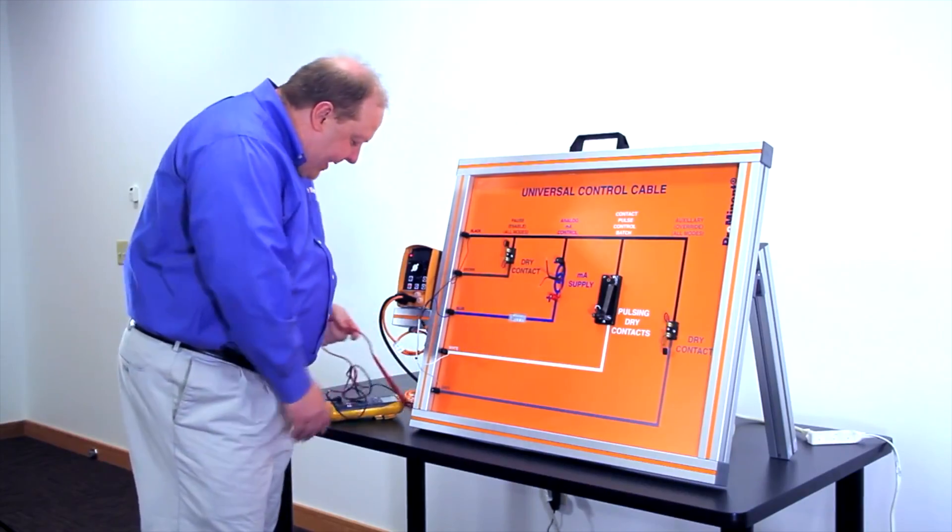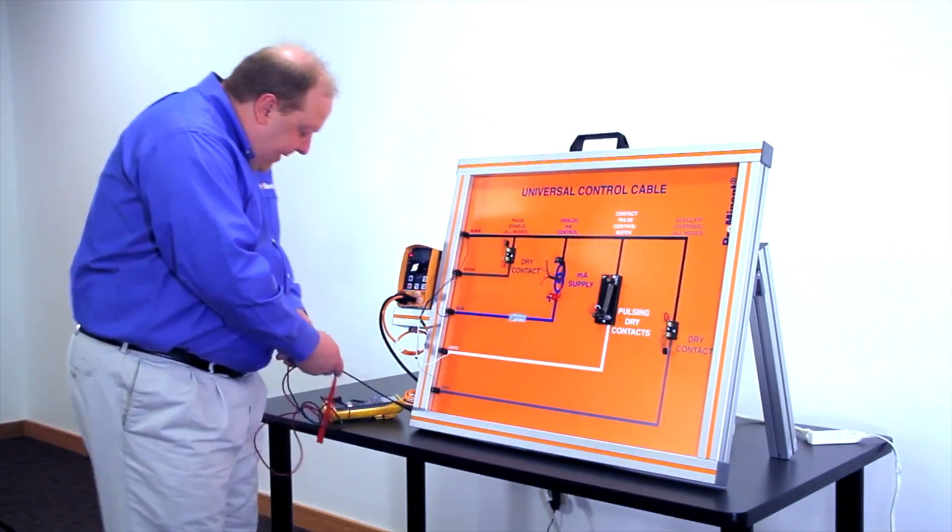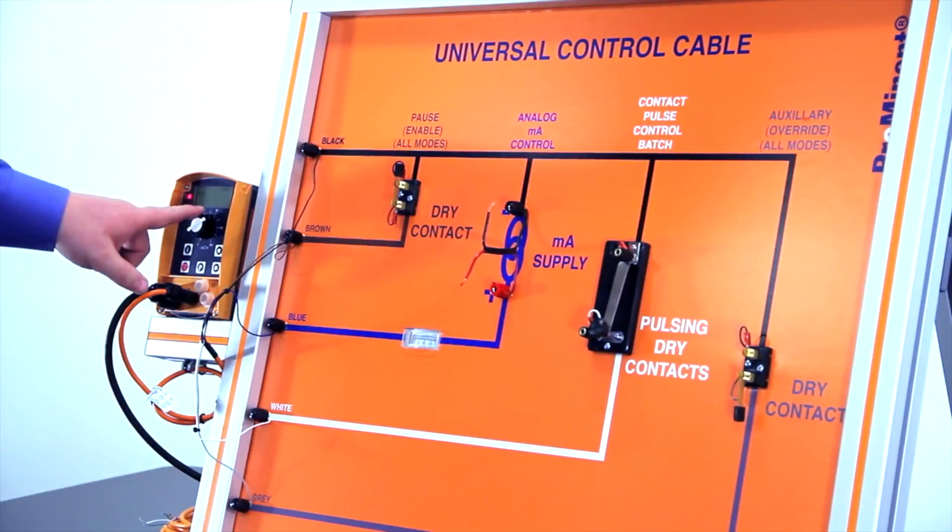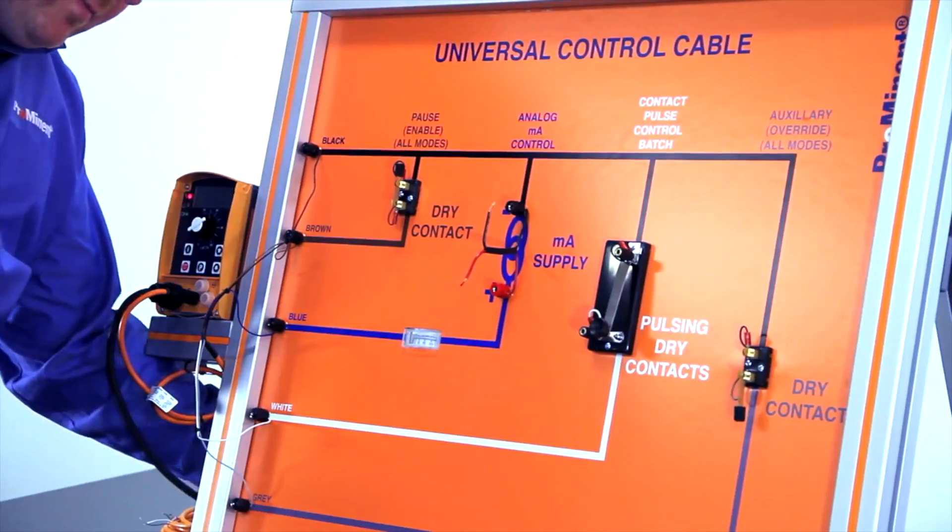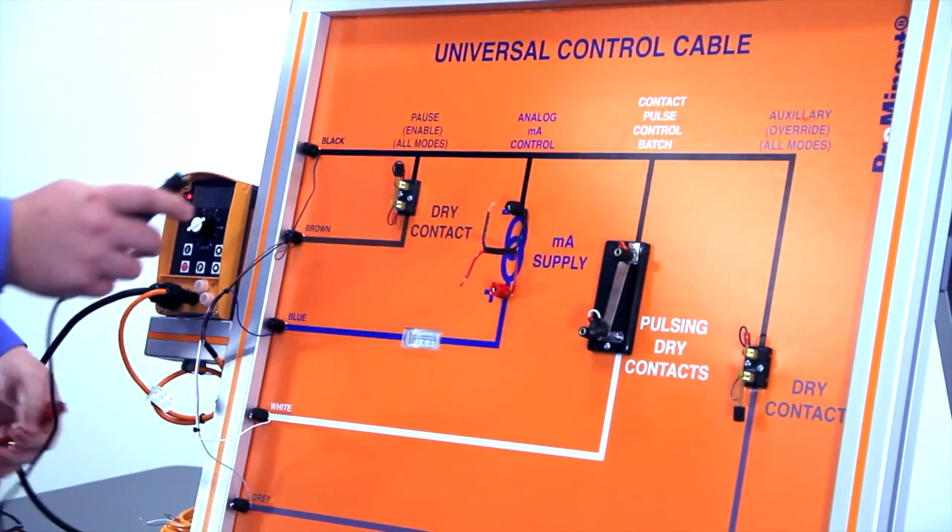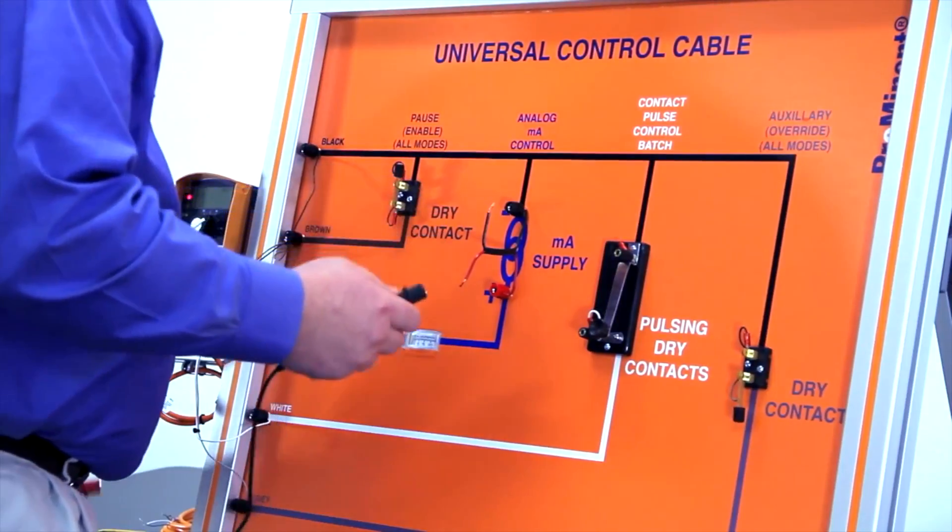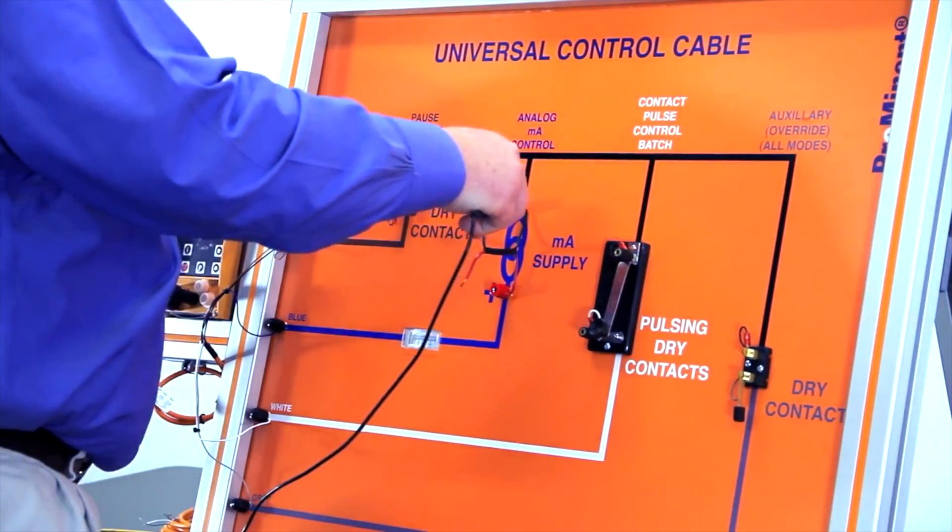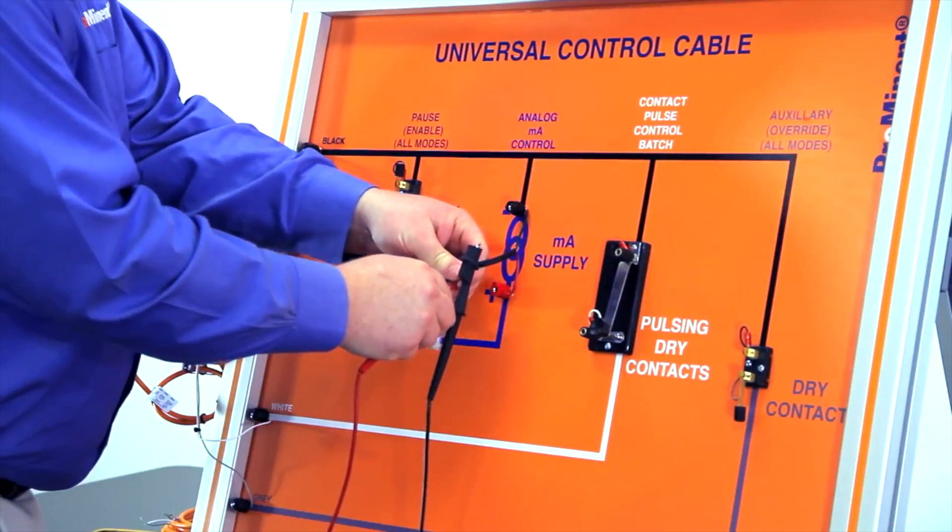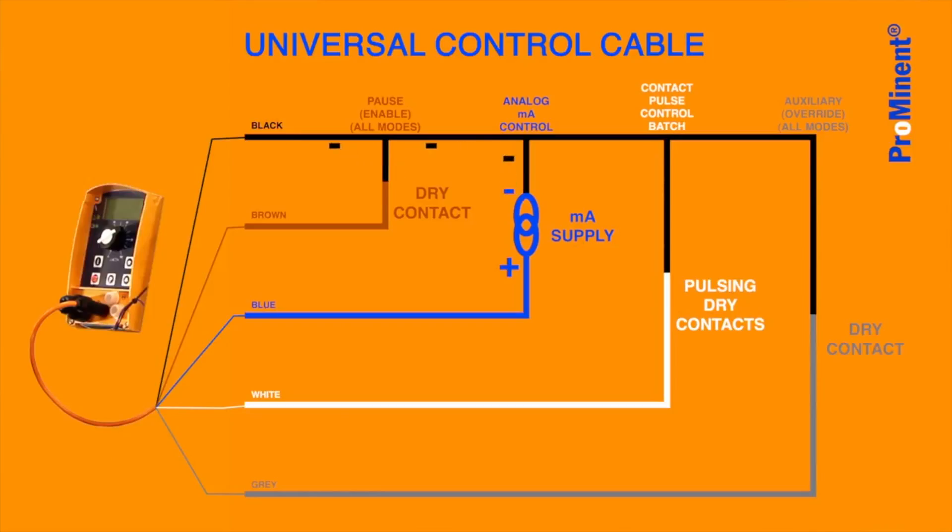Then we have to put an analog signal, typically 4 to 20 milliamps, into our pump. We have to put that input signal into our universal control cable. We'll connect the negative of that signal to the black wire, which again is made to the brown wire with a dry contact. The positive of that signal goes to the blue wire back to the pump.